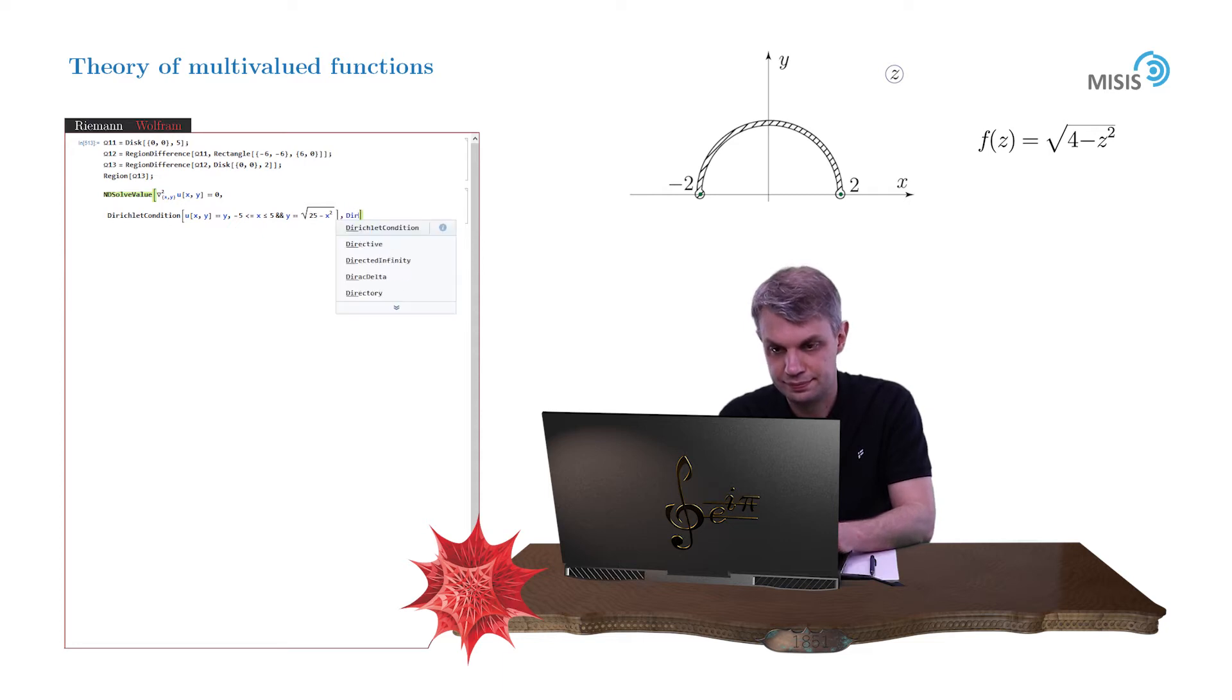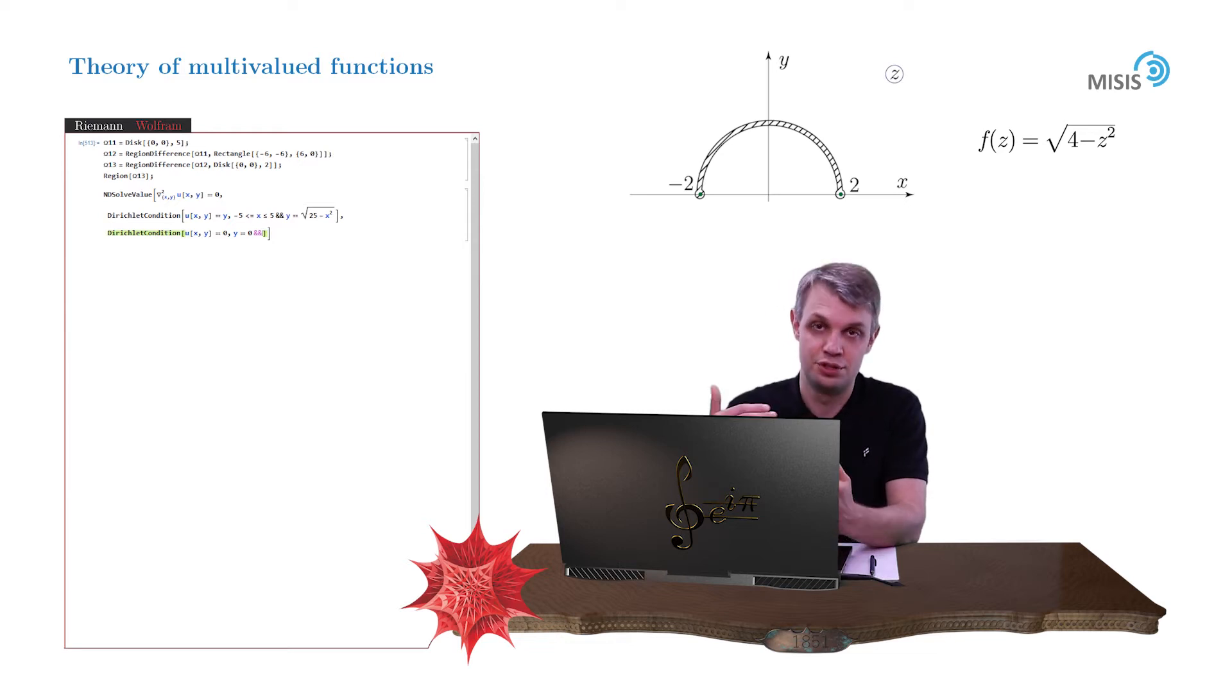And that means that u of x and y is equal to 0 if y is equal to 0, while x belongs to the segment from minus 5 to minus 2 and from 2 to 5. Of course, we excluded the region of the branch cut, where actually two halves shouldn't coincide. So here we go.